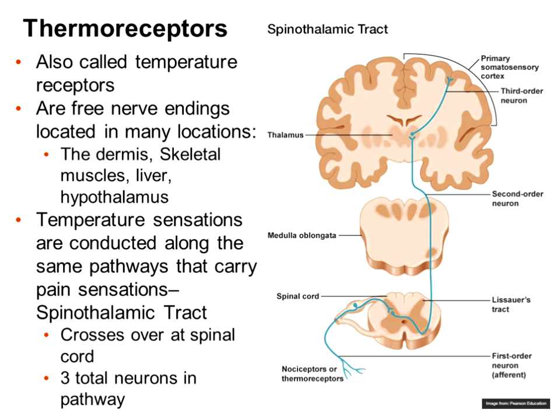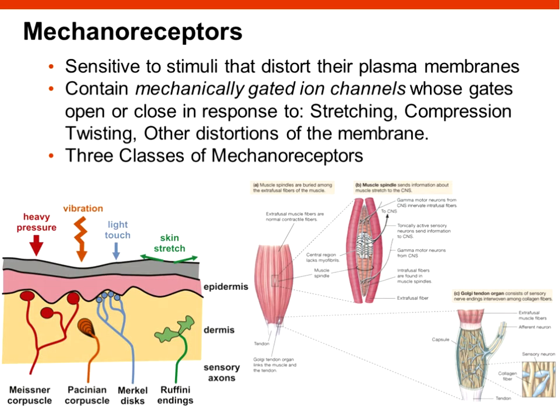Thermoreceptors, like nociceptors, are also free nerve endings — sometimes embedded in specific cells, or just free nerve endings in the dermis of the skin. They are tied mainly to the dermis, skeletal muscle, the liver, and the hypothalamus, where we set points for body temperature. Some will be specifically hot receptors, some specifically cold receptors. They have an afferent neuron bringing information to the spinal cord, traveling up toward the primary sensory cortex while also stopping in the thalamus and hypothalamus.